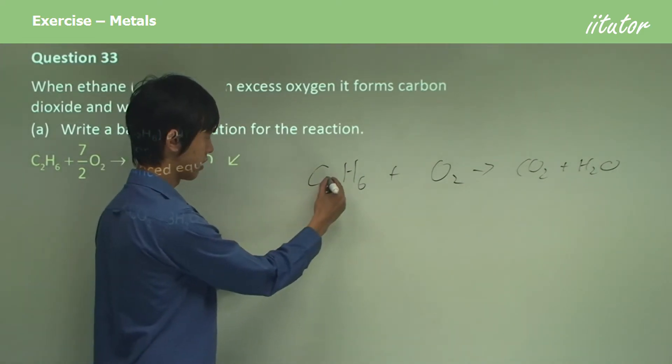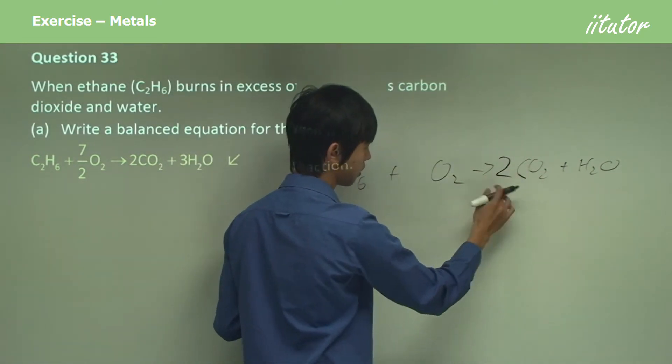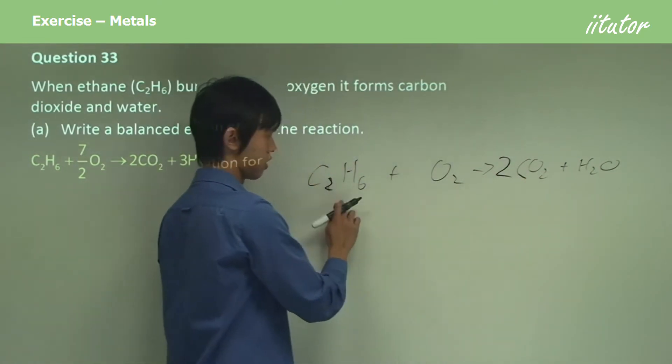Balance carbon first. There are two on this side, there's one on this side, so I multiply by two. Now I've got two on this side, two on this side.